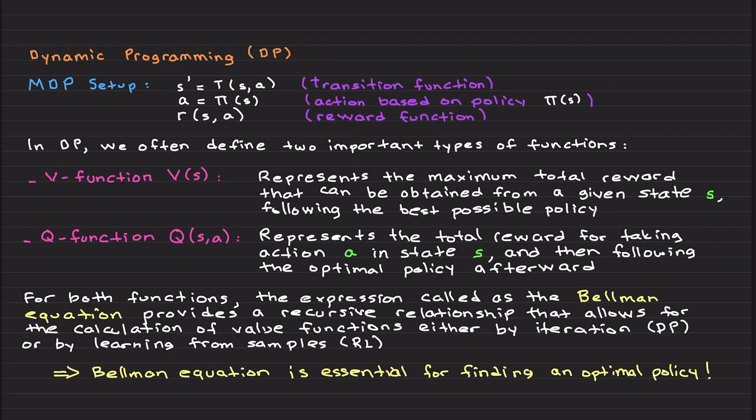Basically, in the last lecture we saw an MDP can be modeled with a transition function, action based on policy pi, and a reward mechanism so that the agent can interact with the environment.